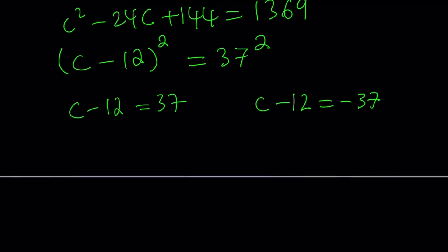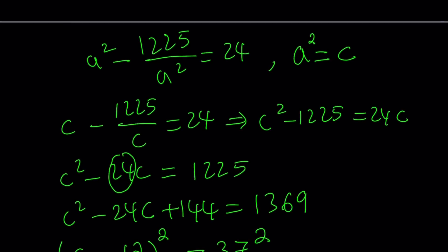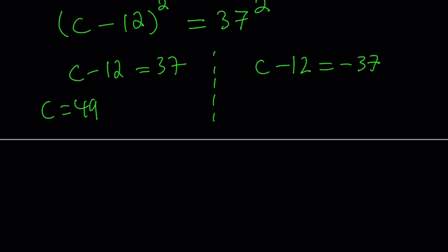Let's take a look at each case. If c minus 12 is 37, that means c is equal to 49. But remember what c was? c is a squared. So we can set this equal to a squared. And a squared equals 49 gives us two solutions: a equals 7, or a equals negative 7. For the other scenario, adding 12, we get c equals negative 25. Set it equal to a squared. You don't get real solutions. You get complex or imaginary solutions, and they're going to be a equals 5i and a equals negative 5i.